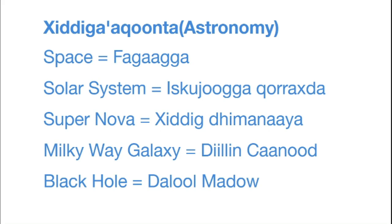Space is fagagga. Solar system is eskujogga qurrahda. Supernova is hiddig-dhimanaya. Milky Way galaxy is delin-anode.